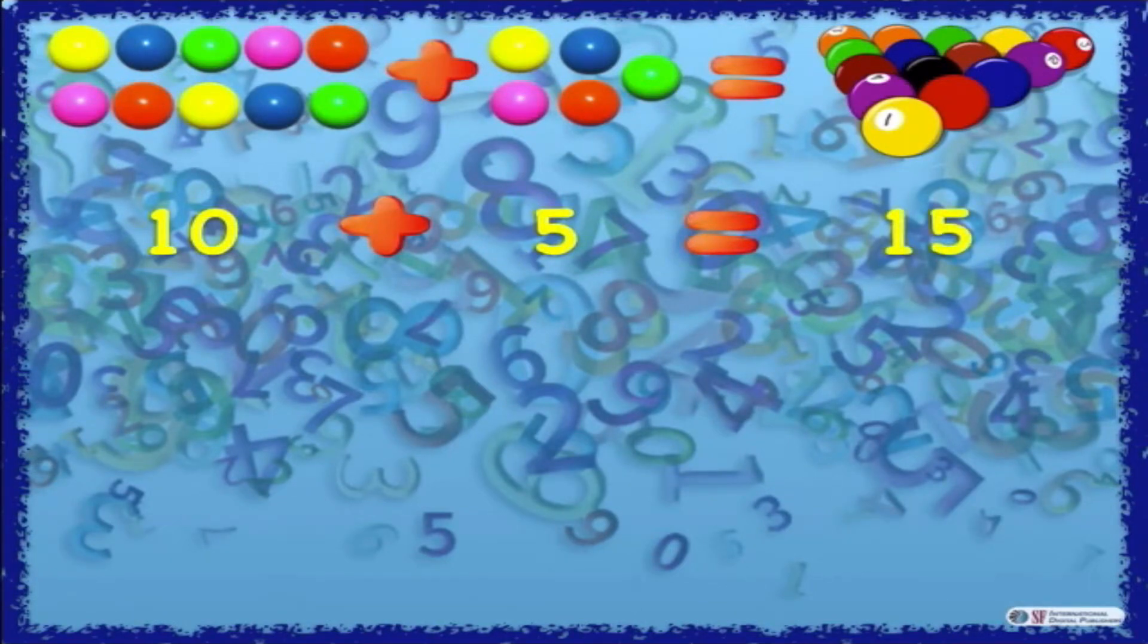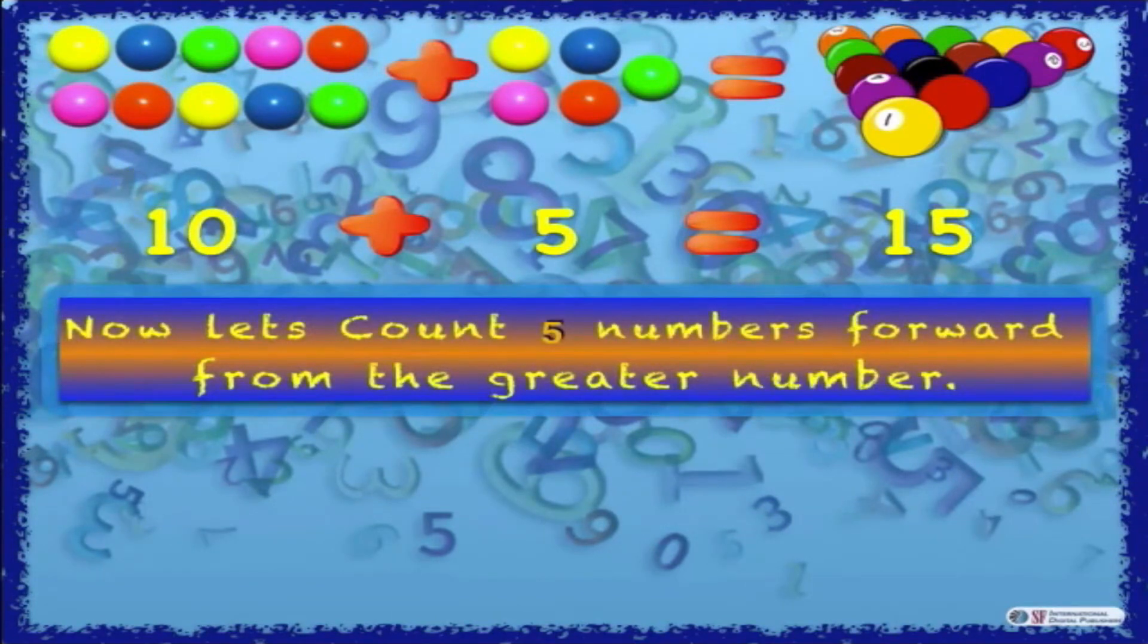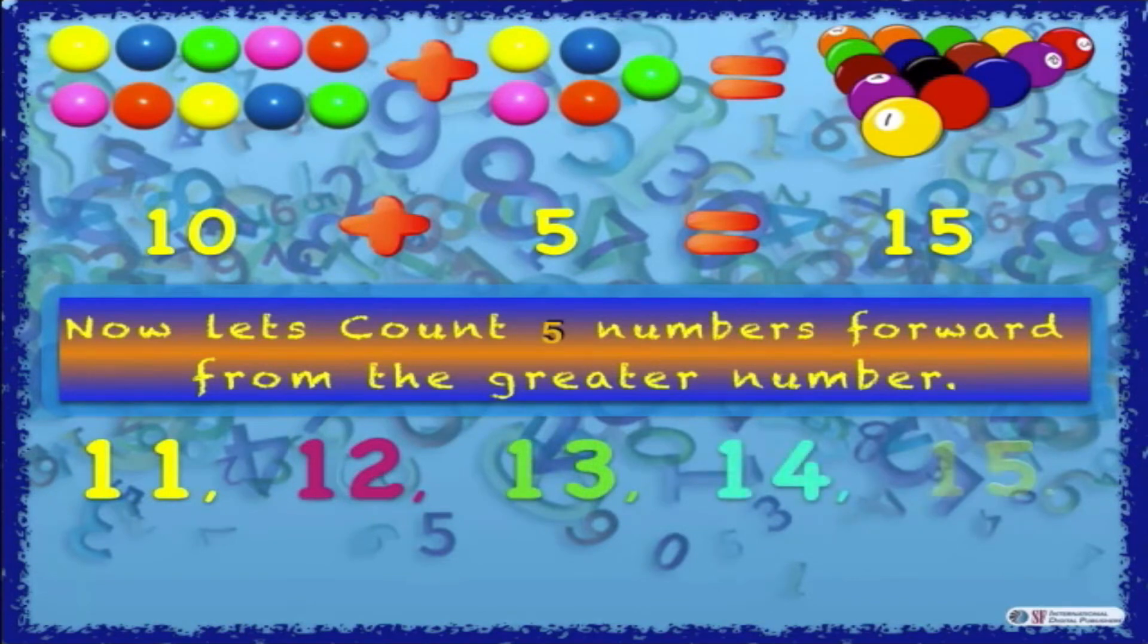Let's explain. To add 10 and 5, count on from the greater number till the next five numbers. From 10 and 5, the greater number is 10. So let's count in ones five times from the greater number to get the answer: 11, 12, 13, 14, 15.